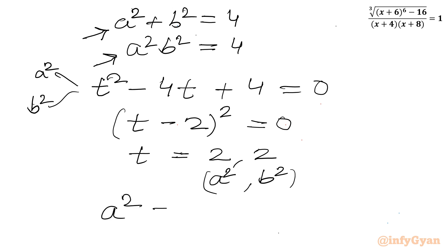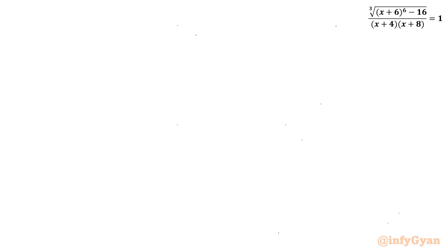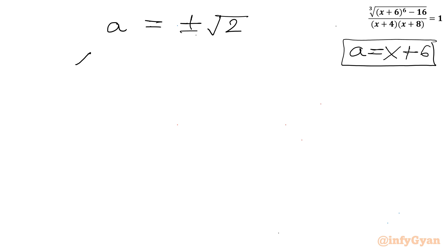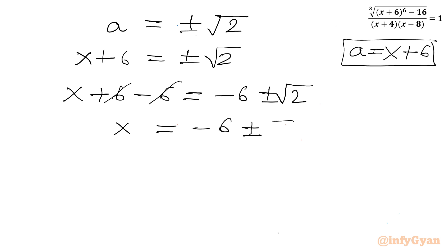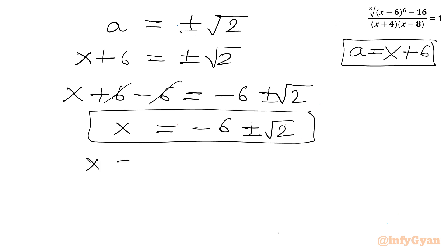Since a squared equals 2, we get a equals plus or minus root 2. Now applying our substitution back — recall x plus 6 equals a — we have x plus 6 equals plus or minus root 2. Subtracting 6 from both sides gives x equals negative 6 plus root 2, or x equals negative 6 minus root 2.